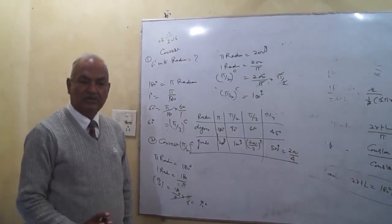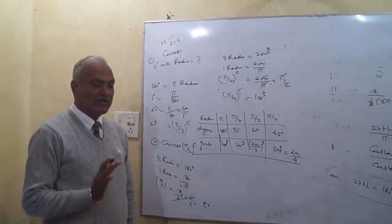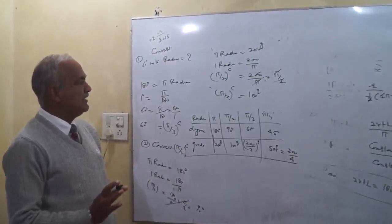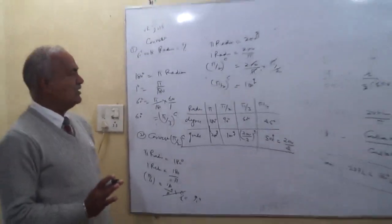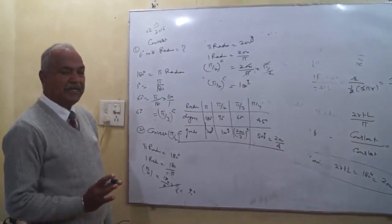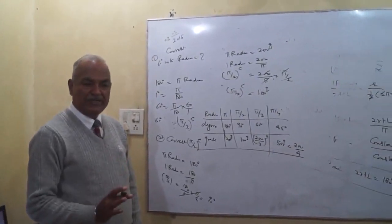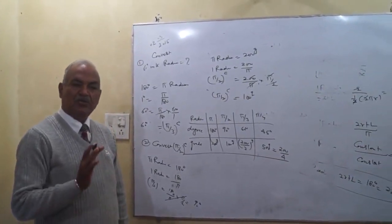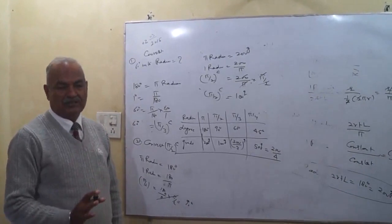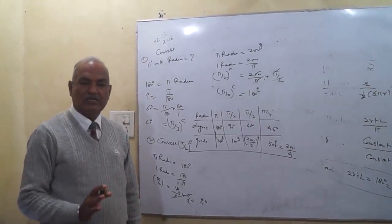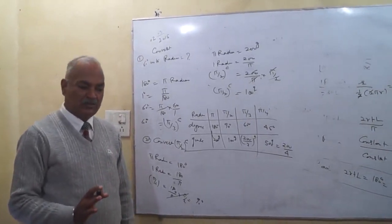To summarize: pi radian is equal to 200 grade, is equal to 180 degrees, is equal to 2 right angles. This is the fundamental relation between radian, degree, and grade.